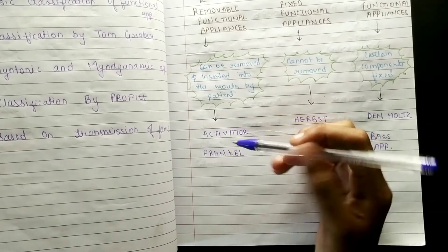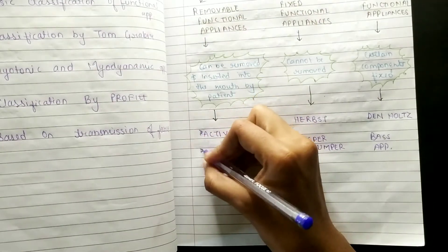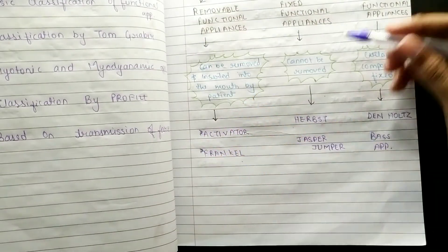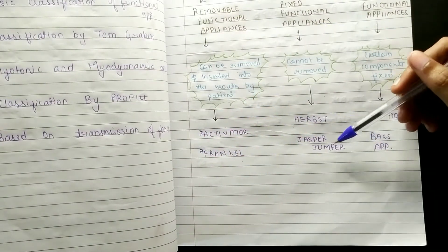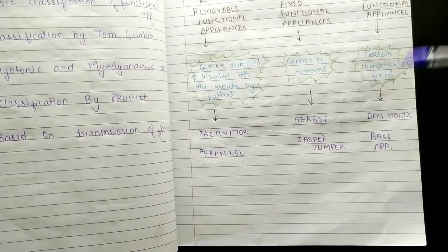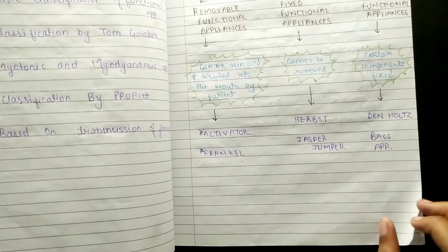In removable appliances: Activator and Frankel. Fixed appliances include Herbst and Jasper Jumper. Semi-fixed functional appliances include Delhalls and Base appliances.